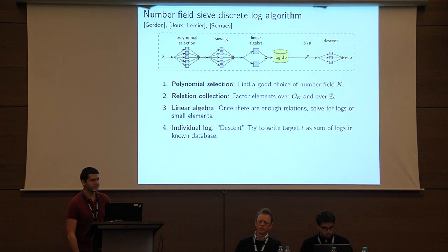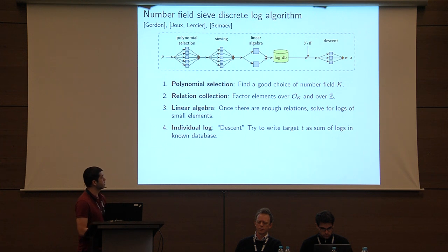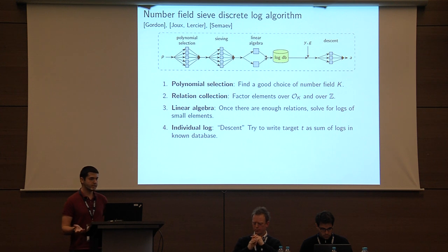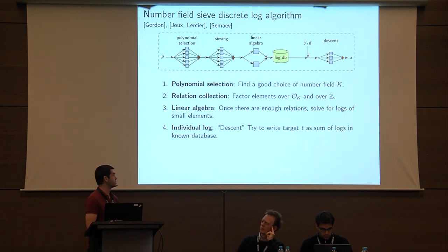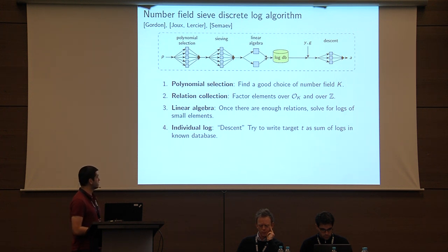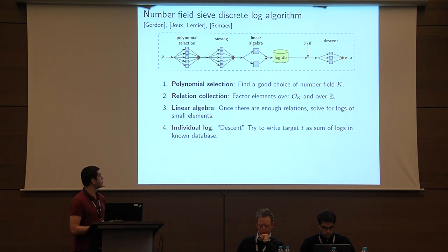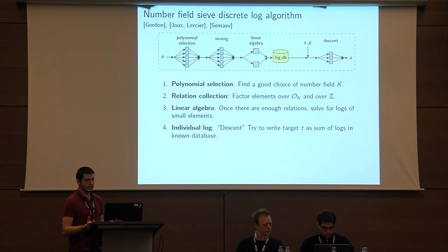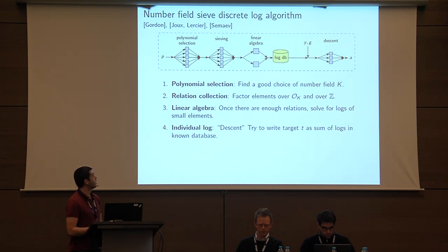Brief review of the number field sieve. There's a first stage of polynomial selection: you pick a good pair of polynomials that share a root modulo the prime you're targeting. You collect relations by sieving the polynomials and collecting results that factor completely below some bound. You perform linear algebra to solve for the discrete logs of elements in your base. And then finally, given a specific target — say Alice's G^A or Bob's G^B — you write that target as the sum of the logs from your computation.